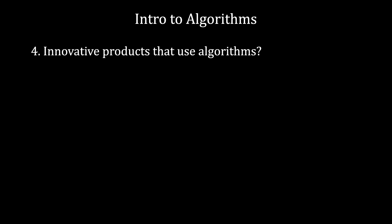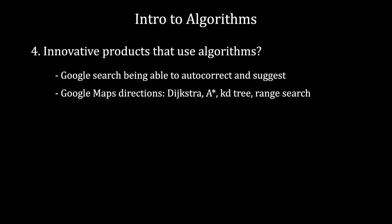Now let's take a look at some innovative products that use algorithms. Well, the short answer to that is almost all of them. But some specific examples would be Google Search, being able to autocorrect and serve you relevant content almost instantly. Google Maps directions, which use path-finding algorithms such as Dijkstra, A-Star, KD3s and Range Search. Google Translate and Dictation, being able to recognize words from voice input.